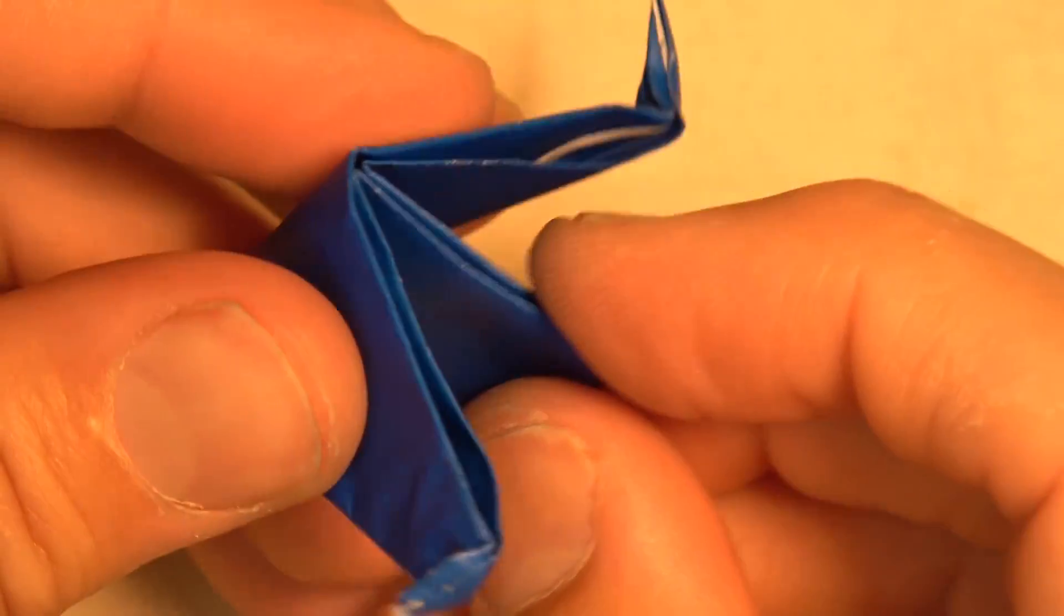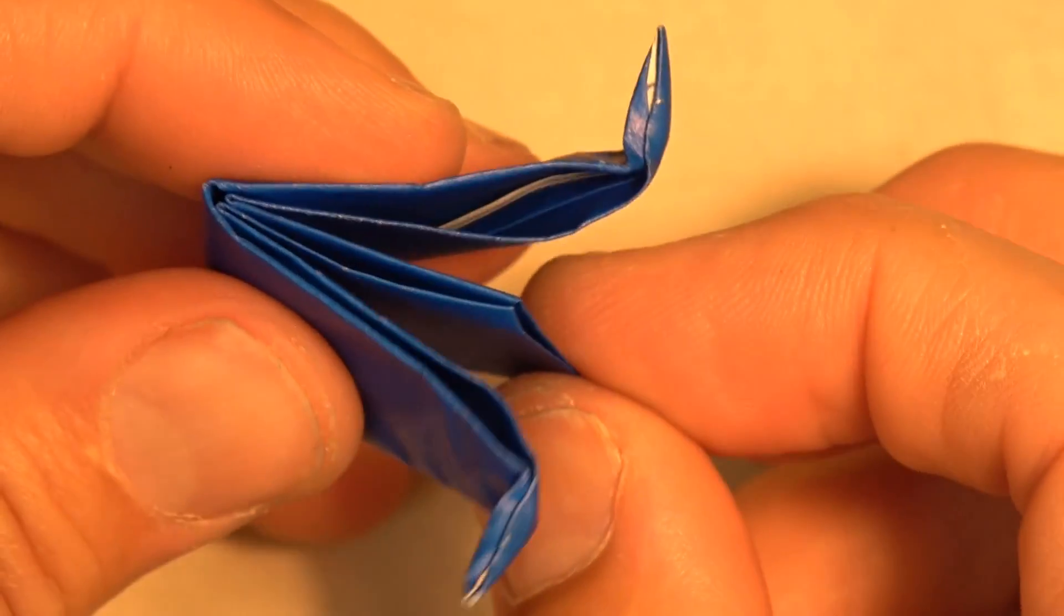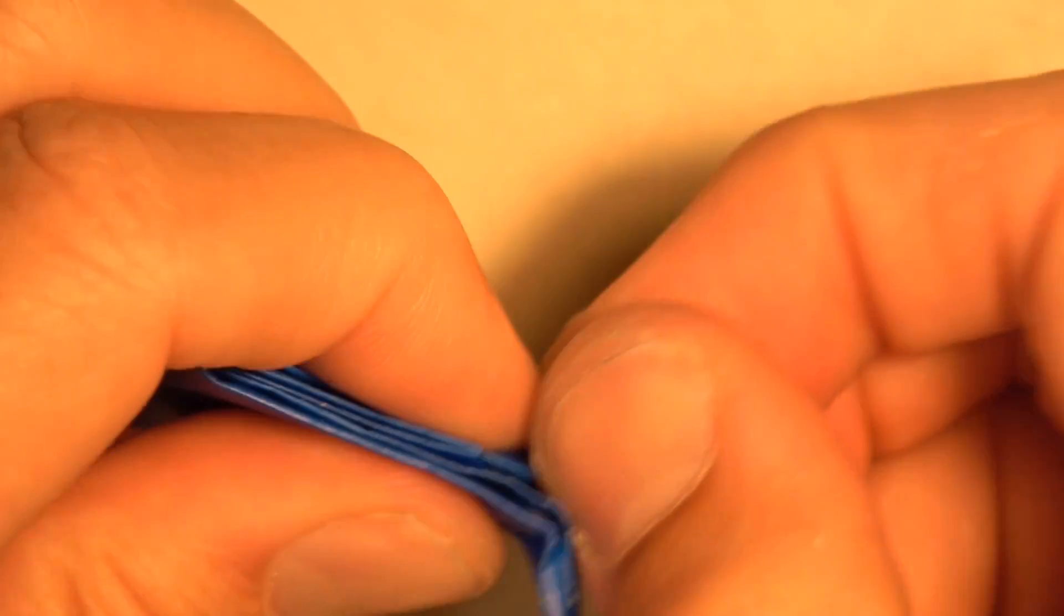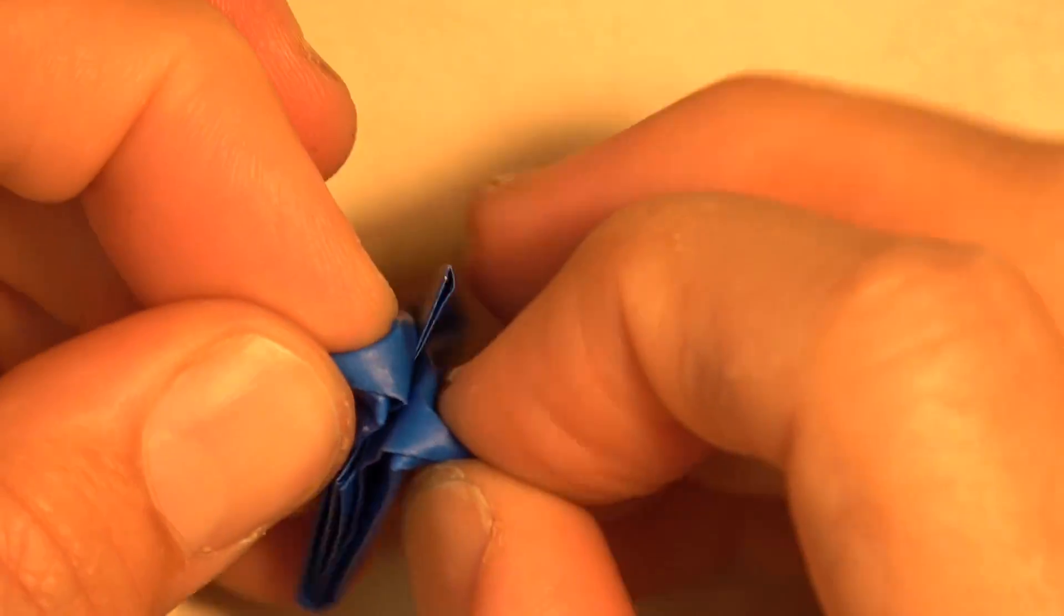Now let's fold these over like this. So we're squeezing this flap between the other two flaps. And bend them again in case they came undone.